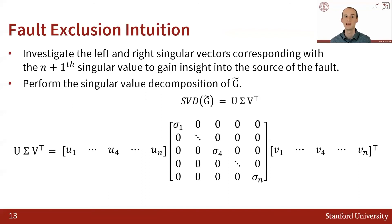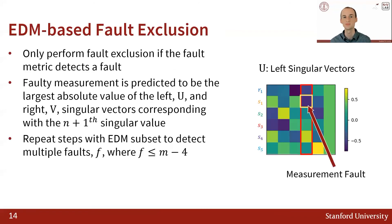Intuitively, these vectors represent how much each of the measurements is contributing to the fact that the fourth singular value is non-zero. Explicitly, for fault exclusion, we identify the largest absolute value of the fourth singular vector and declare its corresponding measurement as a potential fault. We remove that measurement from the EDM and then check whether we still detect a fault.